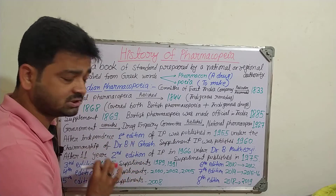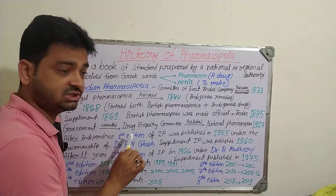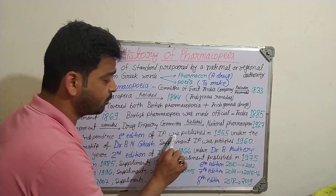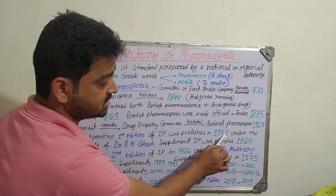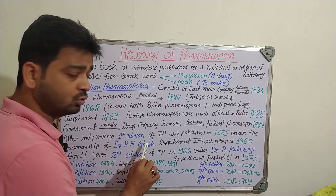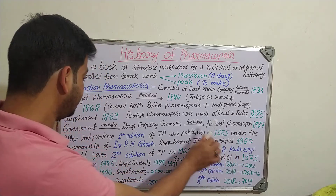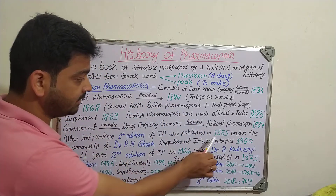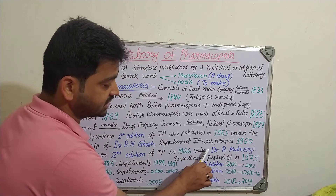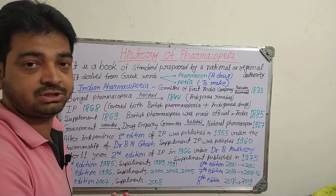After independence, the real story of the Indian Pharmacopoeia began with different editions. The first edition of the Indian Pharmacopoeia was published in 1955 — remember this year — under the chairmanship of Dr. B.N. Ghosh, and its supplement was published in 1960. After 11 years, the second edition was published in 1966 under the chairmanship of Dr. B. Mukherjee. The year and chairmanship of the first two editions are important.